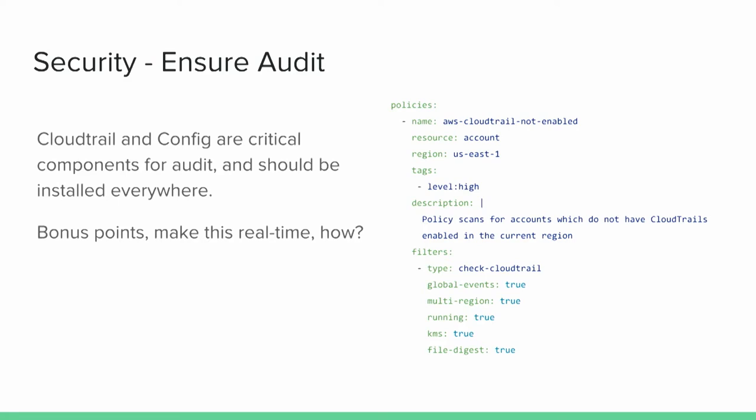CloudTrail is really good and people typically set it up, but they don't necessarily set it up with KMS. We also support a pseudo resource called an account resource. We do things like service limits on it and various other useful things — making sure CloudConfig is enabled, making sure CloudTrail is enabled. You can also set up notifications like 'you're about to hit 80% of your available instances in this region' and get an alert on that, rather than hitting it in production and finding you couldn't scale to handle an event.